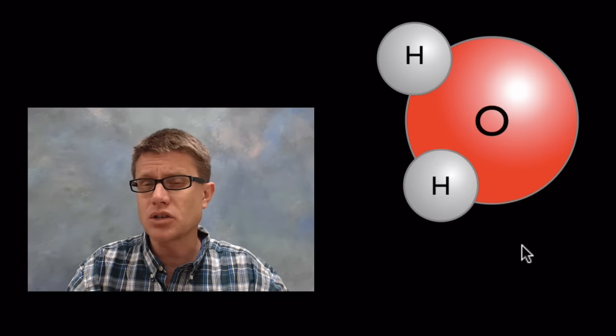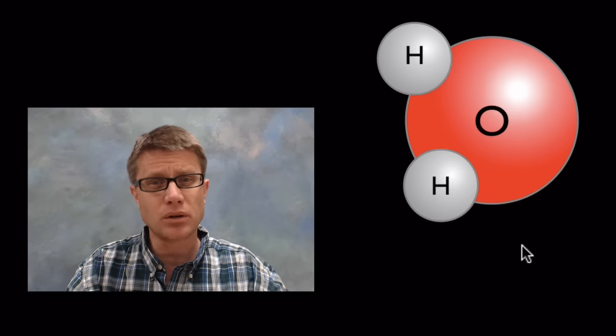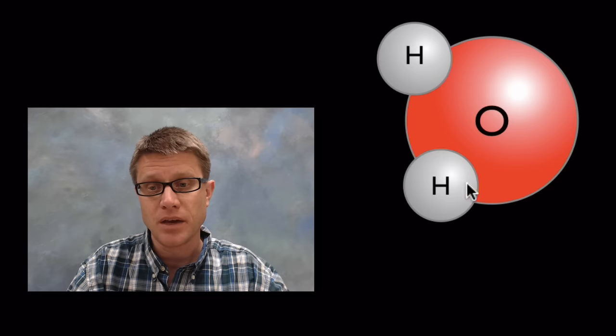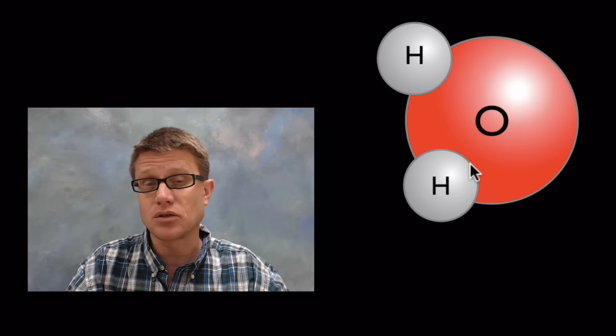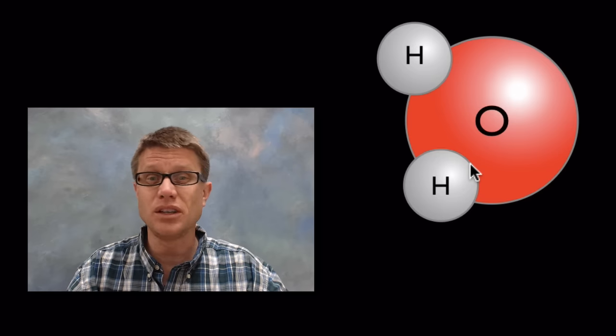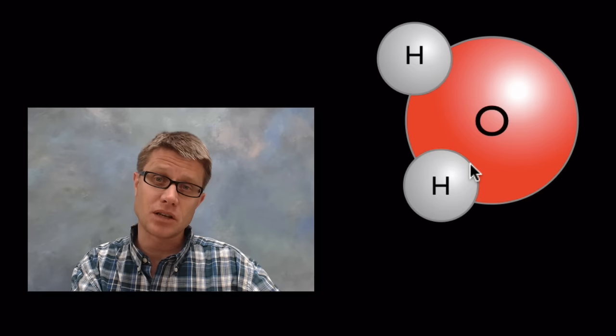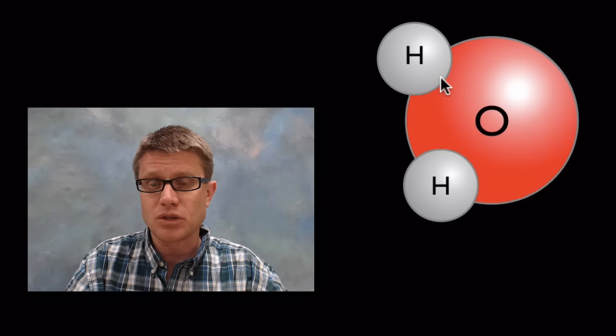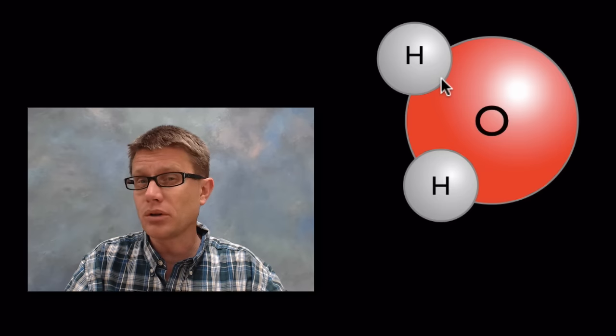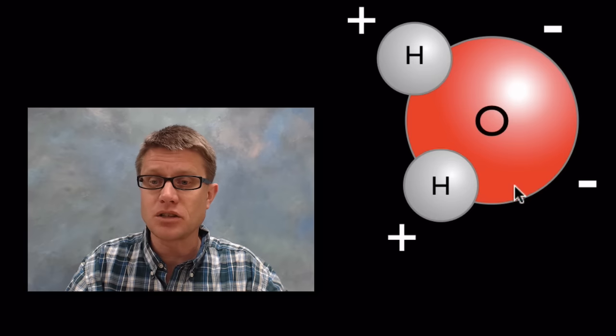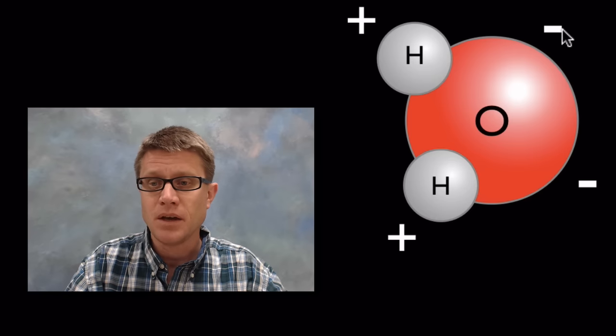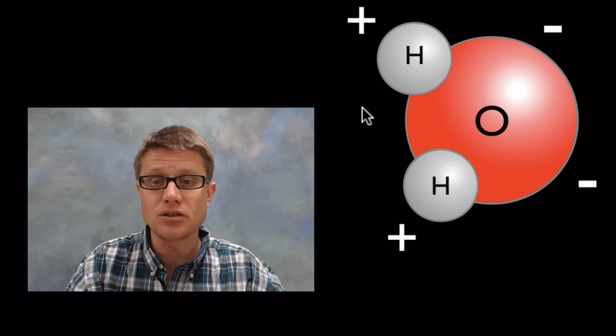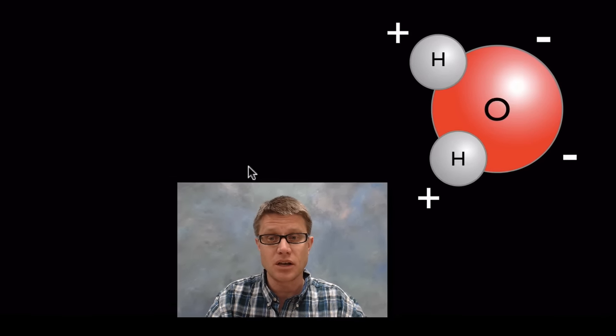Now one thing that you need to understand is that this is a polar molecule. And what that means is there's a covalent bond between the hydrogen and the oxygen. And oxygen is really greedy when it comes to electrons. It's going to pull the electrons towards it. And so this is a sharing of electrons between these atoms. But it's a polar covalent bond. And what that means is since oxygen is pulling the electrons towards it, it's going to have partial negative charge on this side of the oxygen. And the hydrogens are going to have a positive charge on the other side.